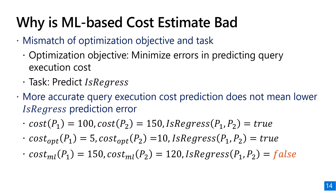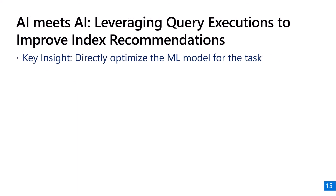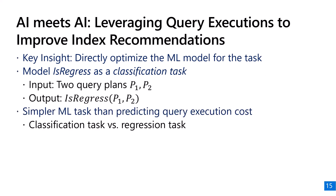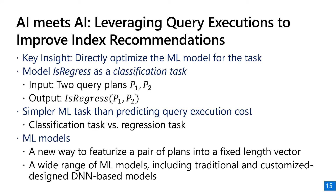Motivated by this observation, we propose a technique to directly optimize the machine learning model for this task. We model is-regression as a classification task, where the input is two query plans and the output is whether P2 is a query regression. Since this is a classification task, it is also generally easier than predicting query execution cost. We propose a new way to featurize a pair of plans into a fixed-length feature vector, and evaluate a wide range of models including traditional models and customized deep neural network models.